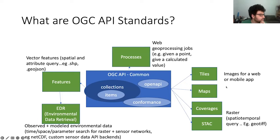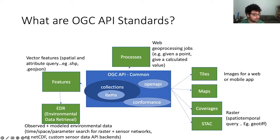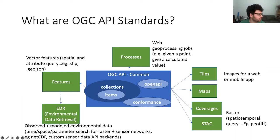Here's the family of OGC API standards. The basic ideas are specified in the OGC API Common standard, which introduces the concept of collections of items — common across many different types of data. It also specifies a conformance endpoint where people can specify which data standards are relevant, and the OpenAPI spec standard for interactive OpenAPI documentation. On top of Common are built other standards; the main ones I'm going to talk about are Features and Processes. Features is basically replacing the Web Feature Service standard — it's to serve geospatial vector features and do spatial and attribute queries on them.